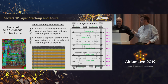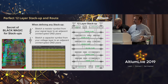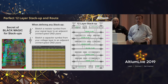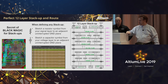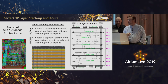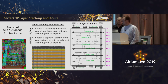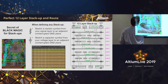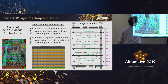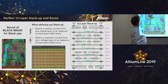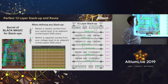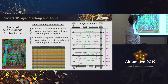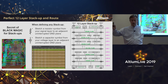When defining a stack-up, a BGA by nature fans out like a wagon wheel. I can walk up to a BGA and tell you immediately how many signal layers this board needs. I look at the power matrix in the center, then count the signal rows radiating outward. On this 1 mm pitch BGA I count approximately 8 rows of signals on each side.